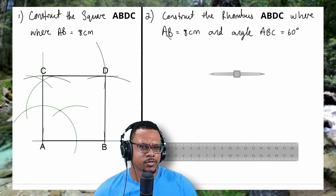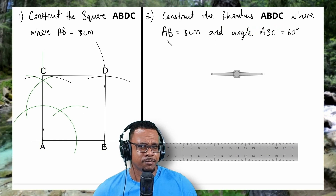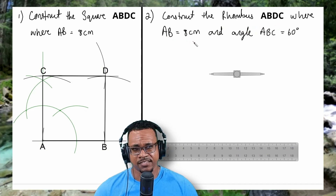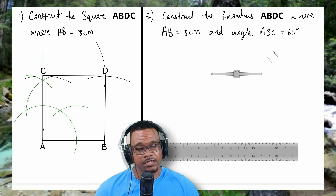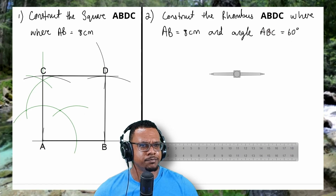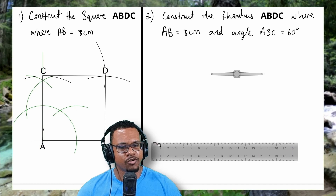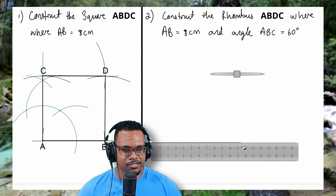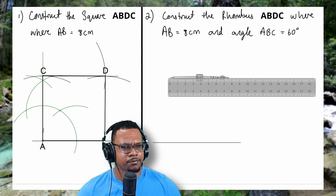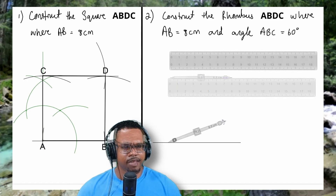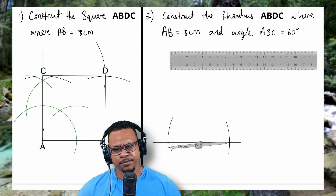Here we have my second question where we want to construct the rhombus ABDC, where the line segment AB is equal to 8cm, and the angle ABC is equal to 60 degrees. So this 60 degree angle will be located at point B, which is the letter in the middle. First I'll take my ruler and draw a light line that's more than 8cm long, then open my compass out to 8cm and construct the line segment AB which is 8cm long.